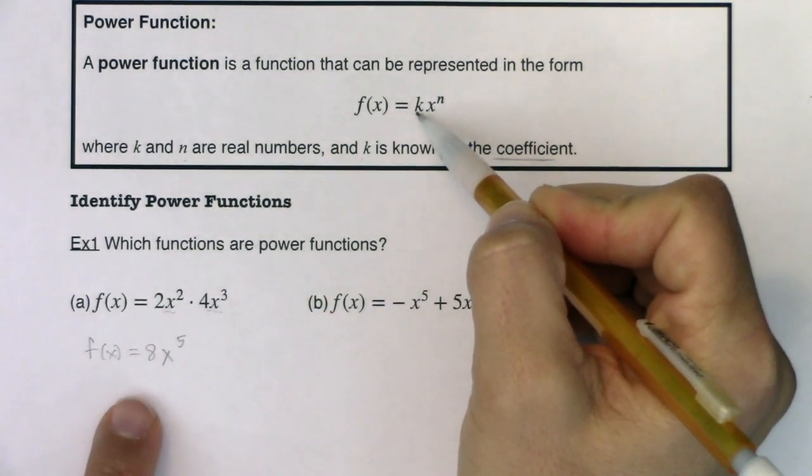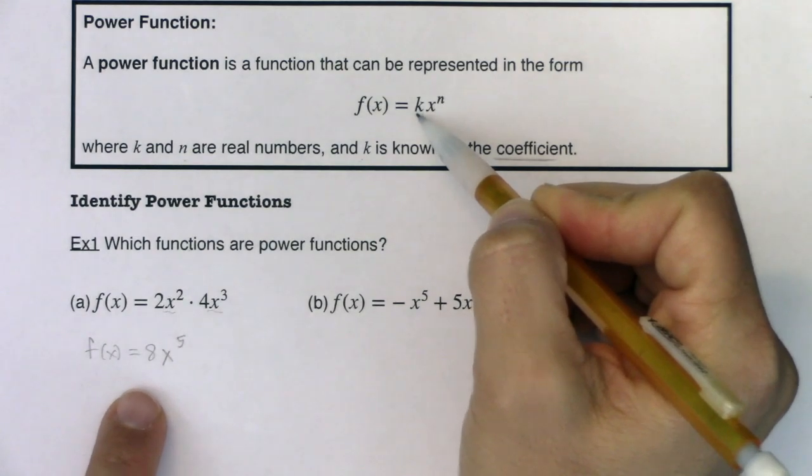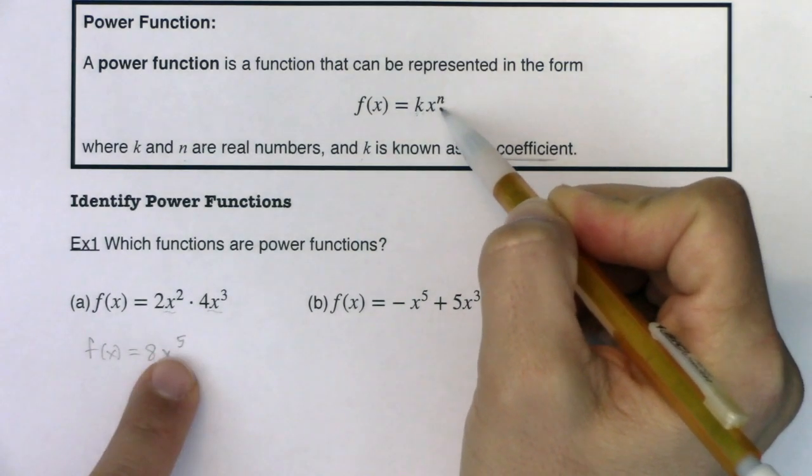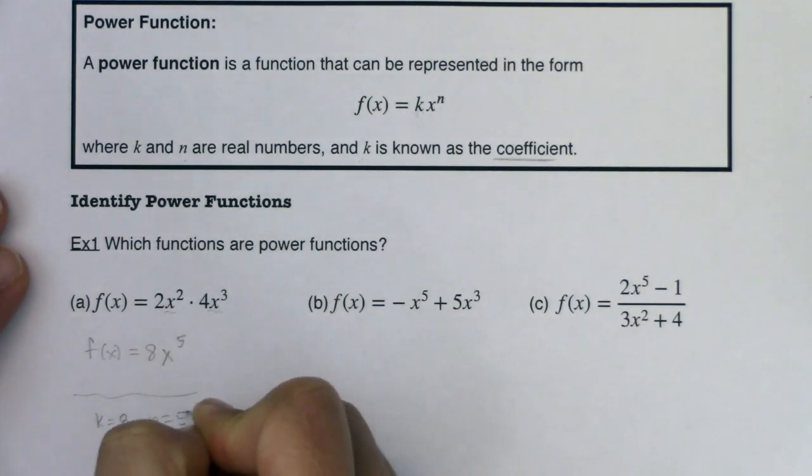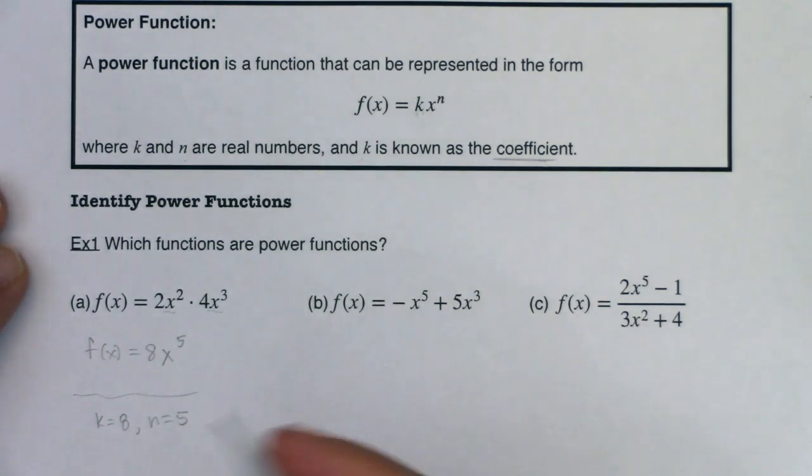If we start to match this up, you can see in this particular example, k is 8 and n is 5. Now you don't have to specify that, but I just want to write it down. k is 8 and n is 5, and this is indeed a power function.